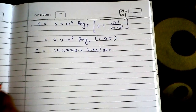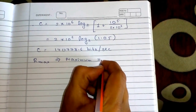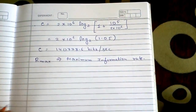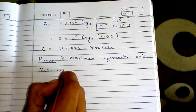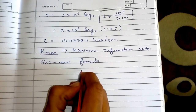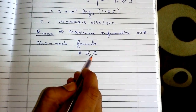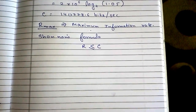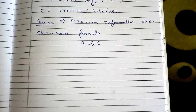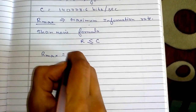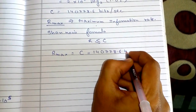What if in the question I am asked to find R_max, the maximum information rate? According to Shannon's formula, R is always less than or equal to C. The maximum information rate will always be less than or equal to channel capacity, because if the channel does not have the capacity, information greater than that cannot be transferred. So R_max equals C = 140,778.6 bits per second.